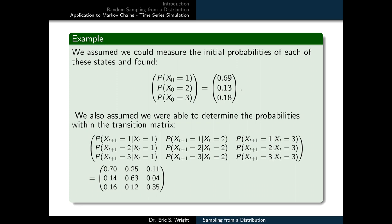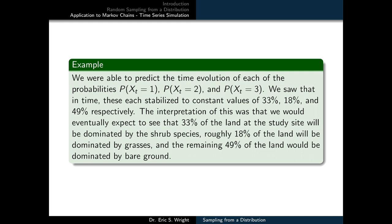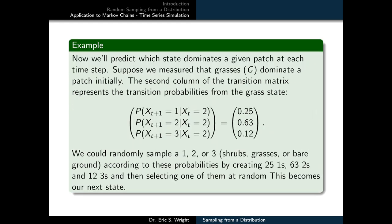Now these are made-up values, but as we'll see in future videos, we'll have ways of measuring these values from data. What we were able to do with this model so far was to predict the time evolution of each of the probabilities representing that the landscape is dominated by shrubs, grasses, or bare ground. We saw that in time these each stabilized to constant values of 33 percent, 18 percent, and 49 percent respectively. The interpretation of this was that we would eventually expect to see that 33 percent of the land at the study site will be dominated by a shrub species. Roughly 18 percent of the land will be dominated by grasses, and the remaining 49 percent of the land would be dominated by bare ground.